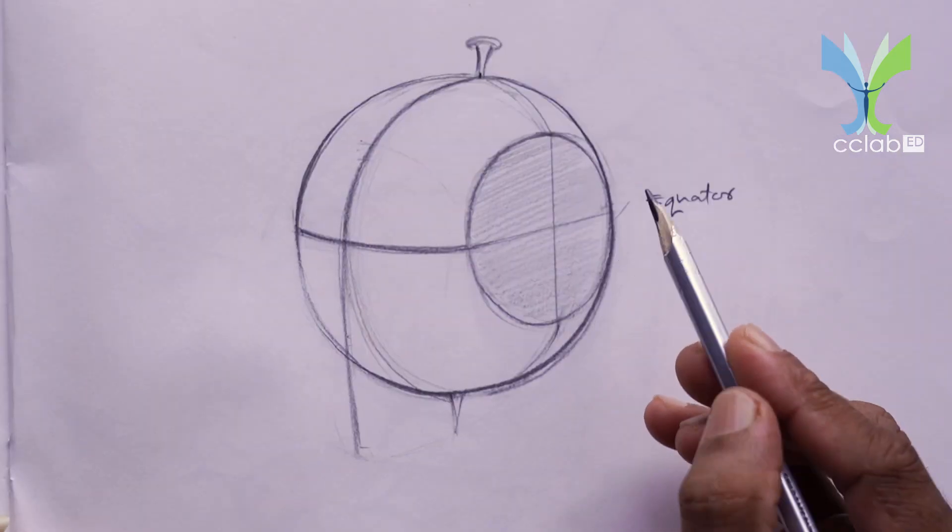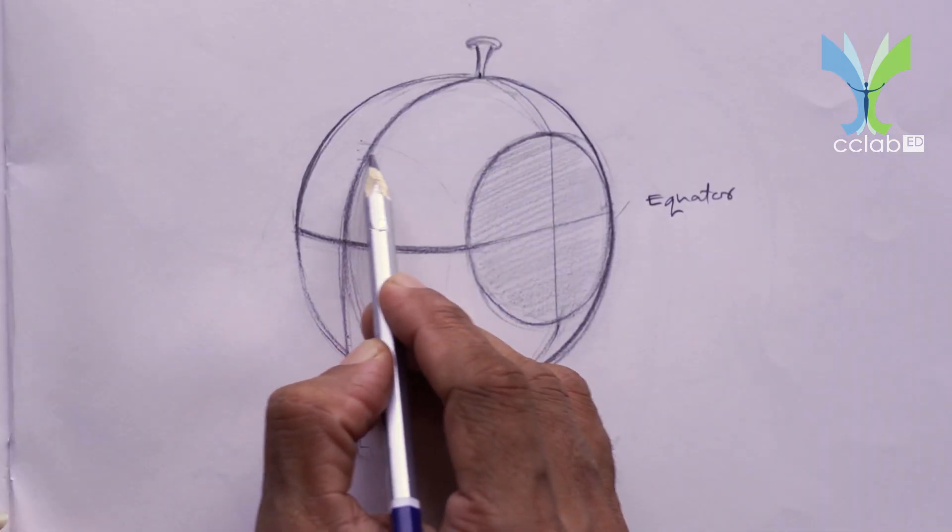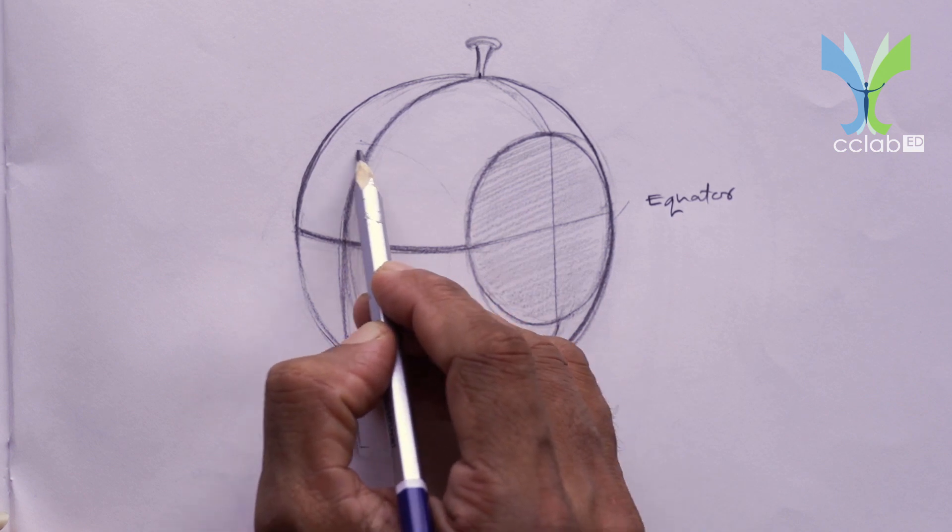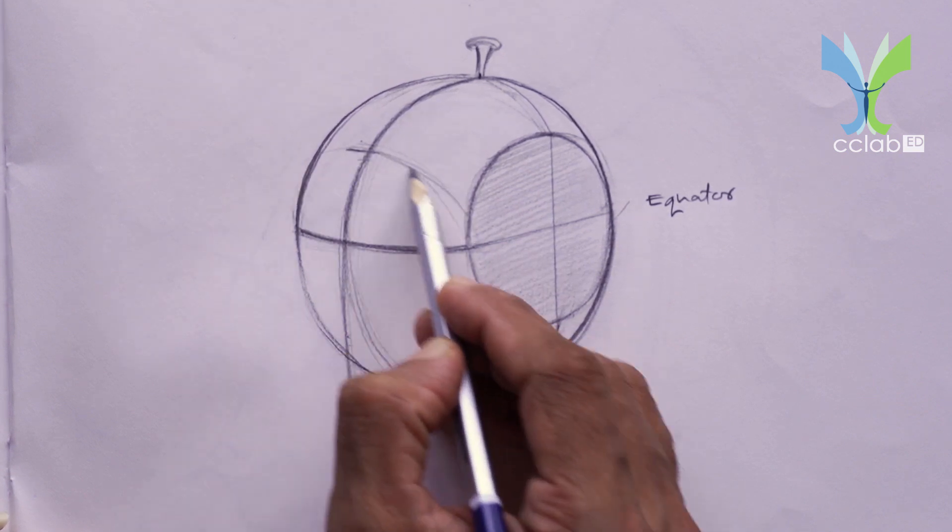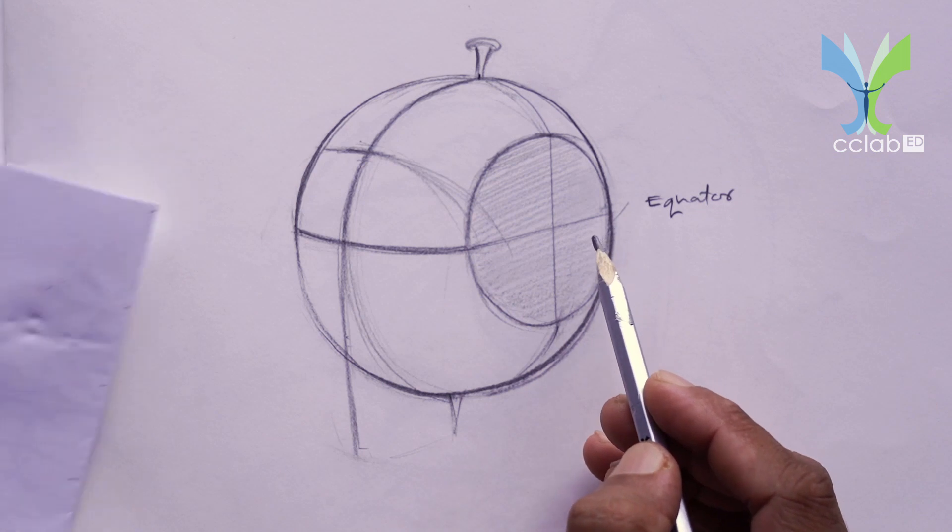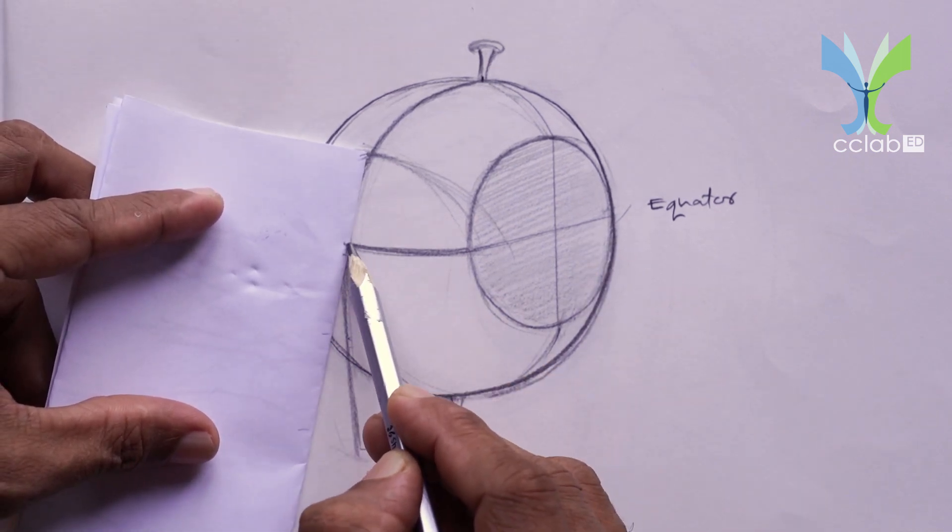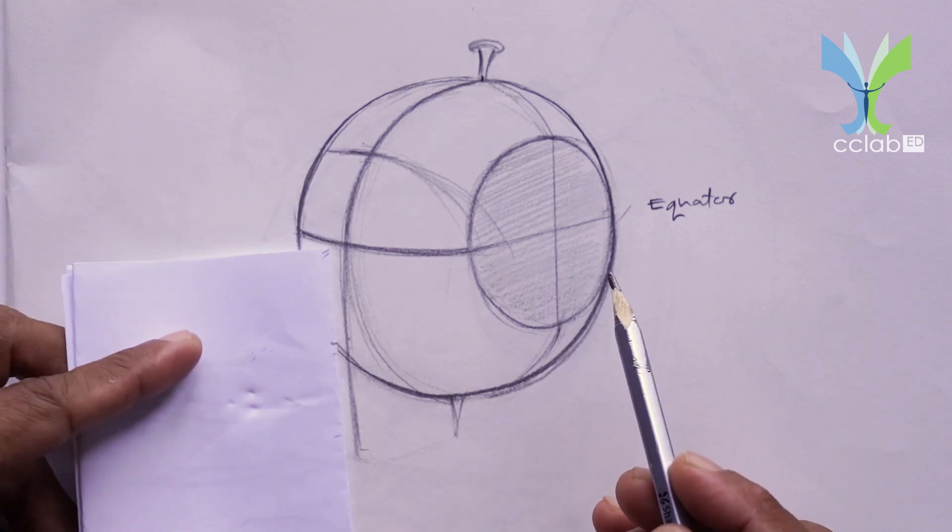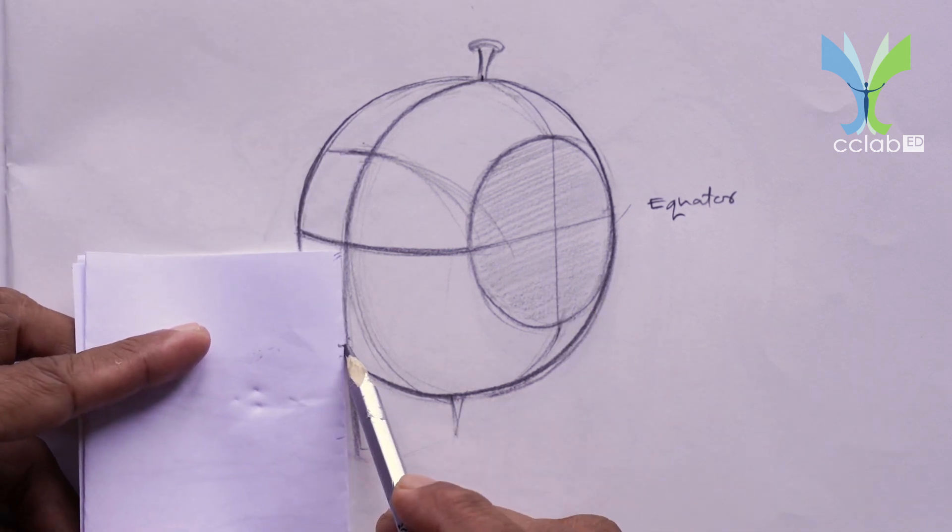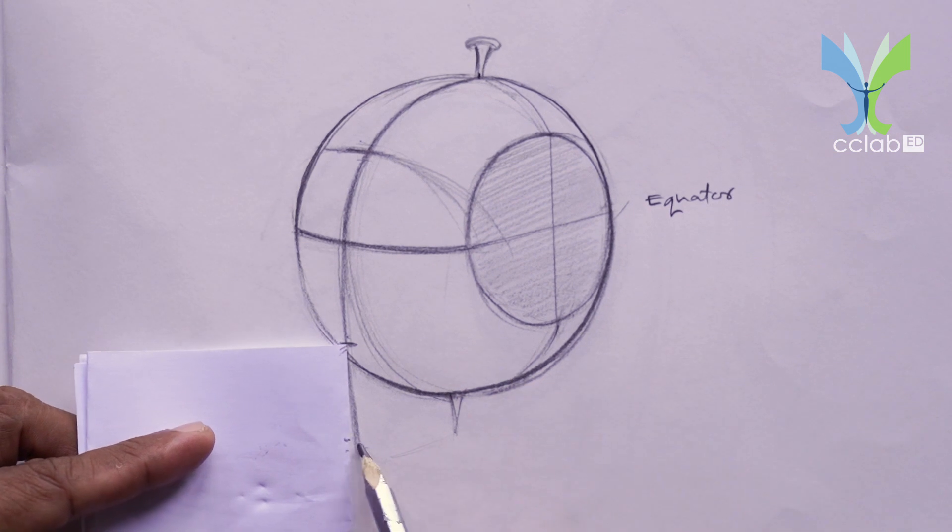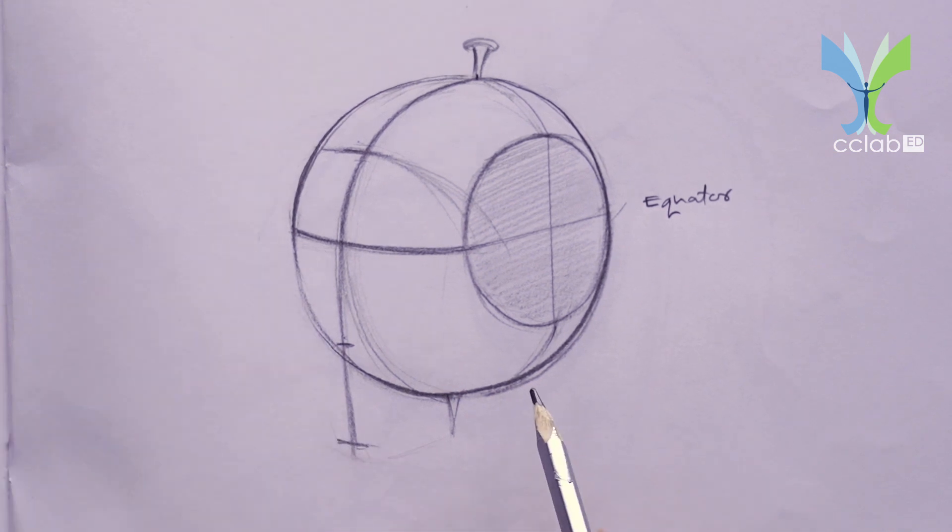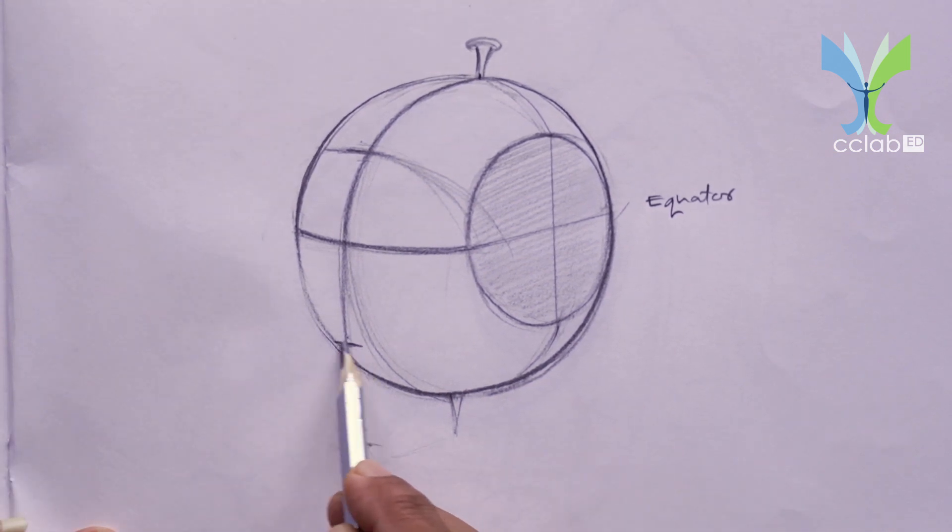About halfway up from the brow line to the axis, we establish the hair line. We drop the middle line straight down off the ball. On this we mark off two points about equal to the space of the forehead or from brow line to the hair line. This gives us the length of the nose and below that the bottom of the chin.